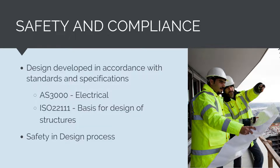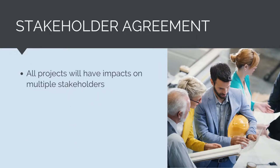Furthermore, a safety and design process will take place where key stakeholders are engaged in the design development process to ensure that what is proposed to be built is safe for constructing, maintaining, using, and eventually demolishing. All projects will have impacts on multiple stakeholders. They can be internal, like the project owner, operations and maintenance personnel and users, or external like local councils, utility owners, and the local community. Stakeholders need to understand the implications of the project on them, and often their needs and requirements will need to be integrated into the product.